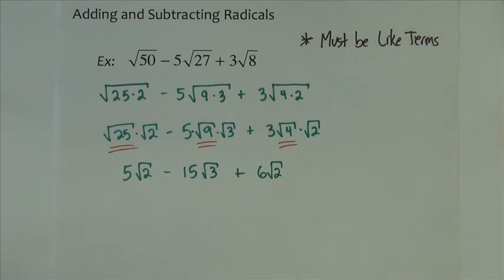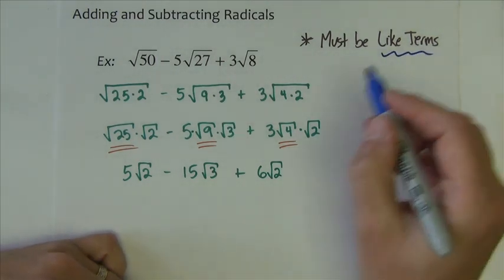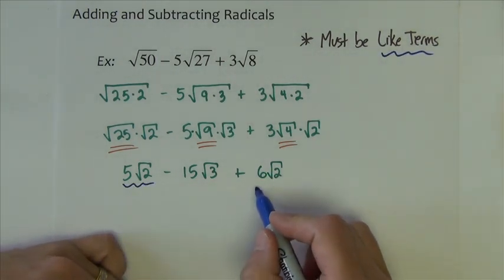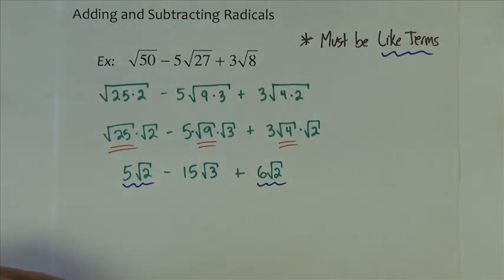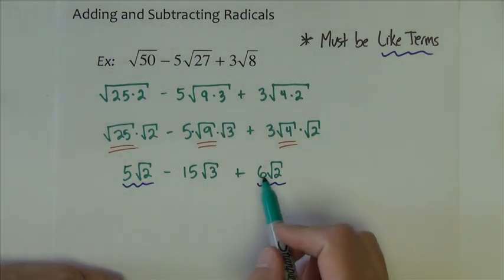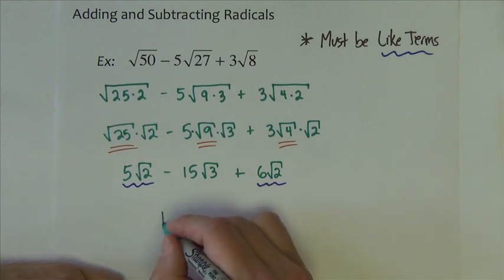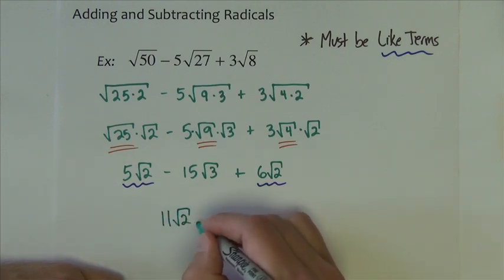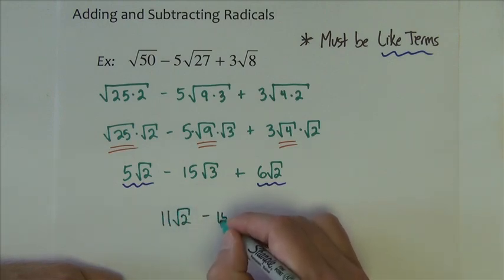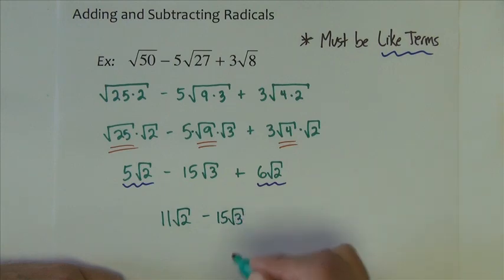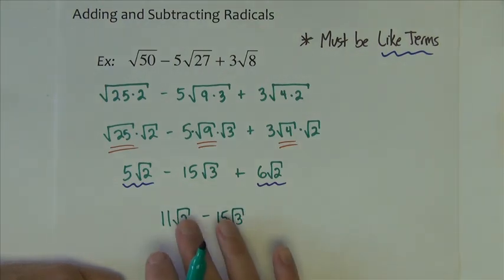Now we can look for the like terms. And like terms are the ones that have the same number underneath the radical. And we just add how many of those we have. We have 5 of them over here. We have 6 more over here. If we add them together, we have 11 square root of 2. And then that square root of 3 term just stays as it is. And that's finished.